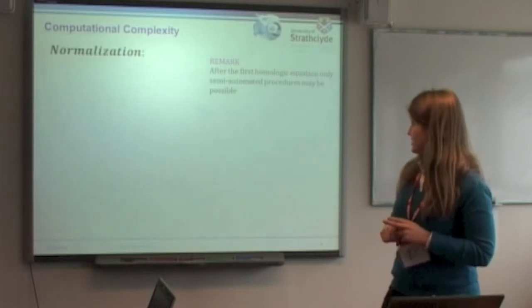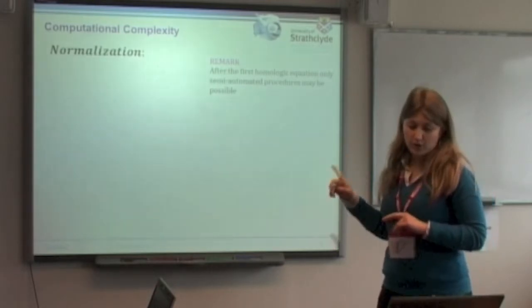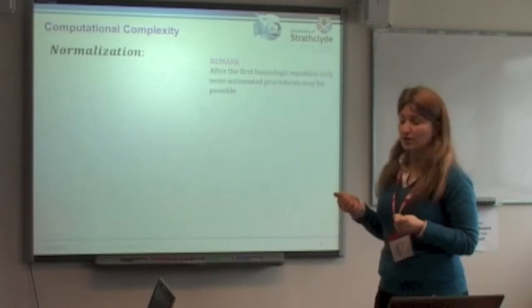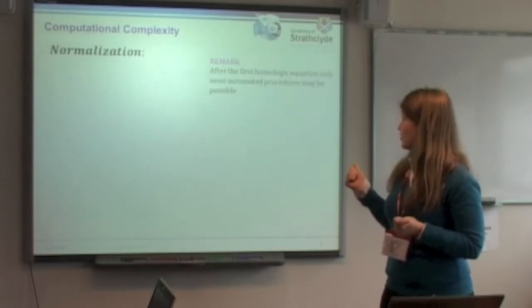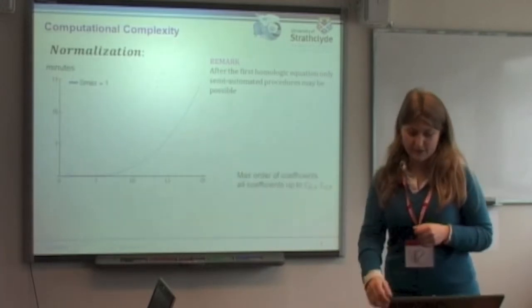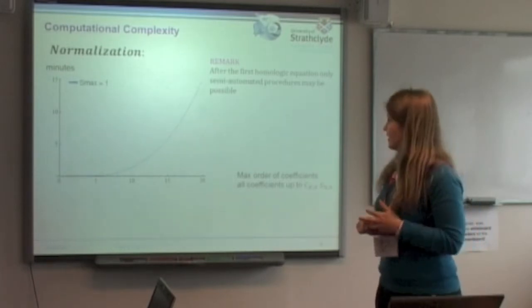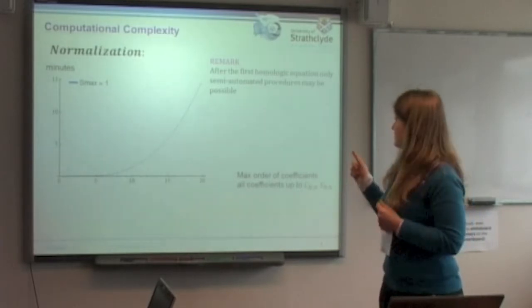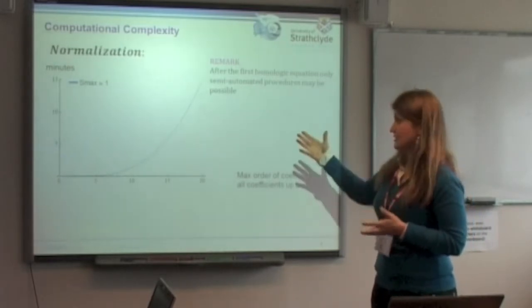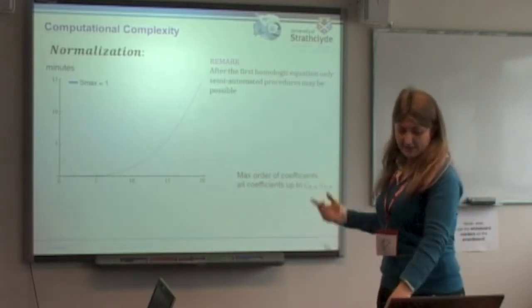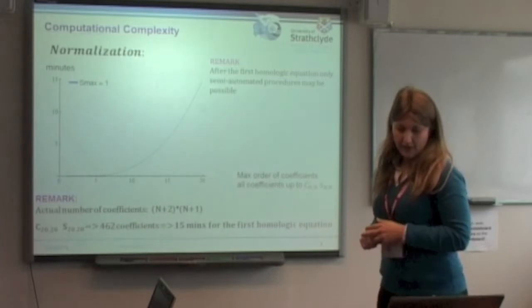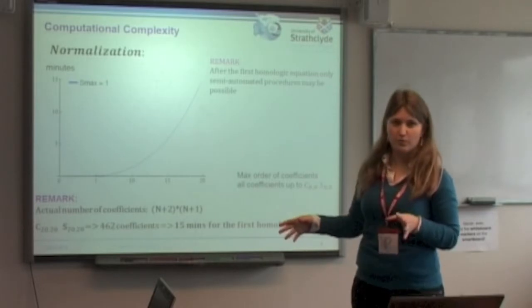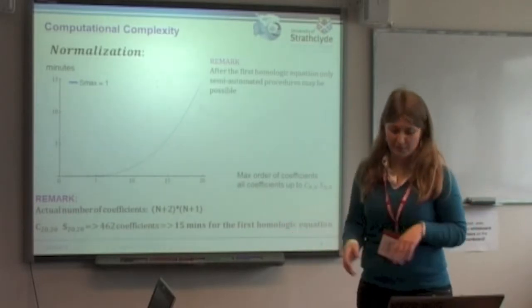About the normalization, what we have to say at the beginning is that it's not possible to pass in an automated way to the second homological equation. So the only way is to evaluate the first homological equation, and this is a problem that we found, but it's a well-known problem. And so this is much faster as a procedure, and this is the computational complexity curve. Again, for 20 coefficients, it's going to take 15 minutes, so if we want to process that, it's 20 hours plus 15 minutes at least.